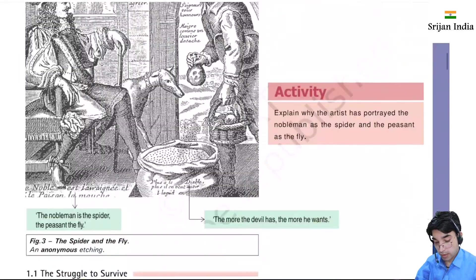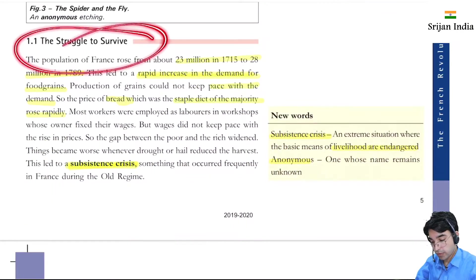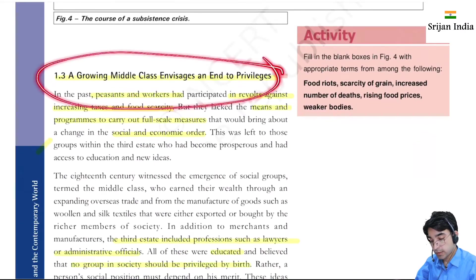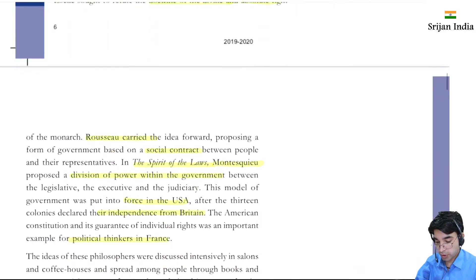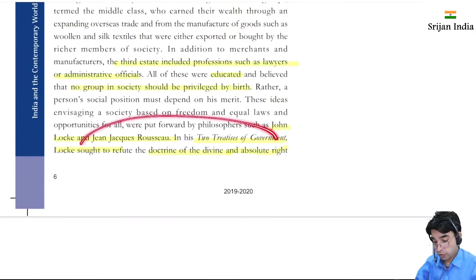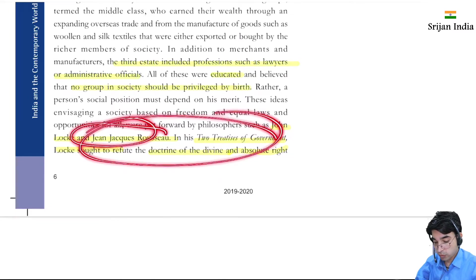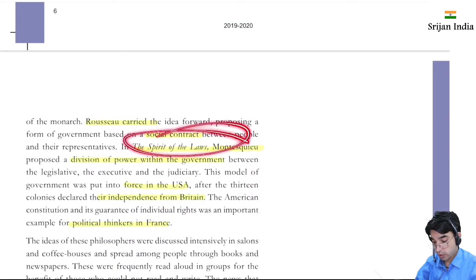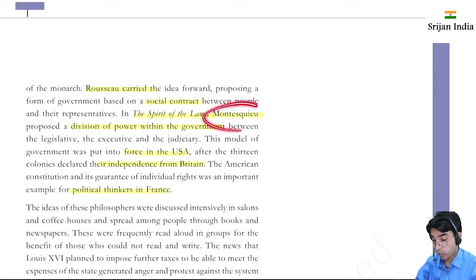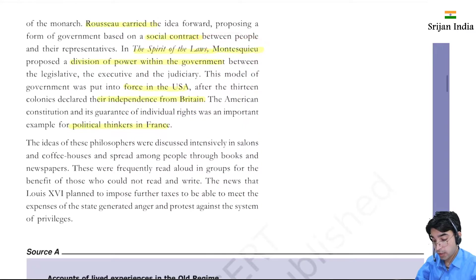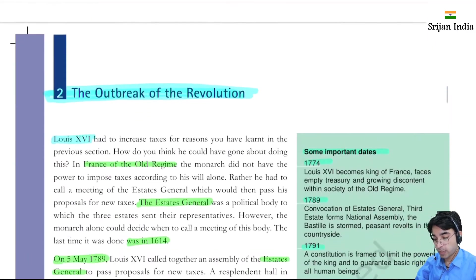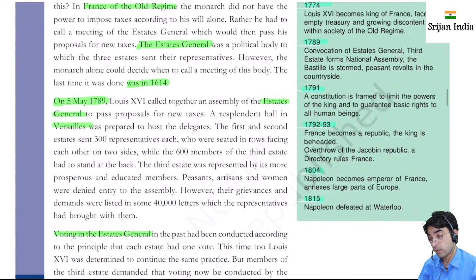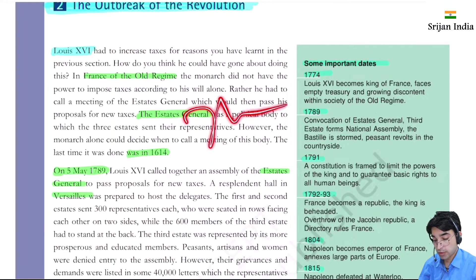The struggle to survive was the subsistence issue, and the middle class was at the center of it. Thinkers like Jean-Jacques Rousseau wrote 'The Social Contract' and Montesquieu wrote 'The Spirit of Laws.' These thinkers gave the revolution its fundamentals, pillars, and direction — shaping the world order we see in the 21st century.